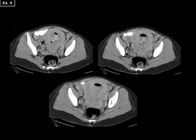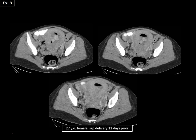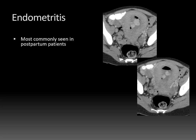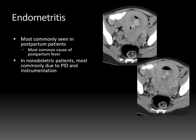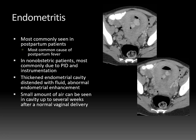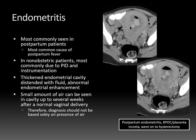Here's a more advanced case: a patient with gas in the endometrium and lobular enhancing masses in the endometrium, with a fluid-filled and dilated endometrial cavity. This was a female who had delivery 11 days prior with clinical suspicion of endometritis. This finding is most commonly seen in postpartum patients and is actually the most common cause of postpartum fever. In non-obstetric patients, it's usually due to pelvic inflammatory disease and instrumentation. Findings typically include a thickened endometrial cavity distended with fluid and abnormal endometrial enhancement. A small amount of air can normally be seen in the endometrial cavity up to several weeks after normal vaginal delivery, so that finding alone is very nonspecific.